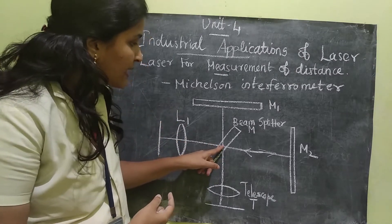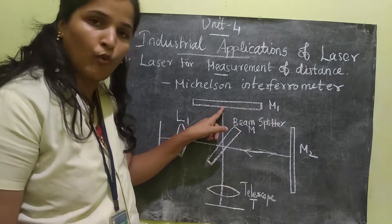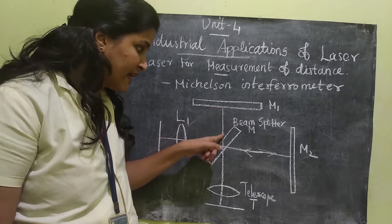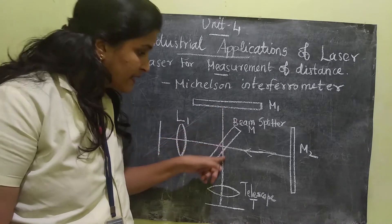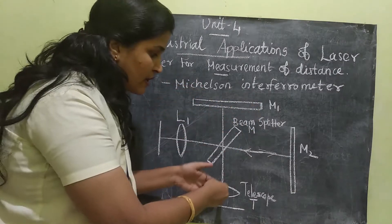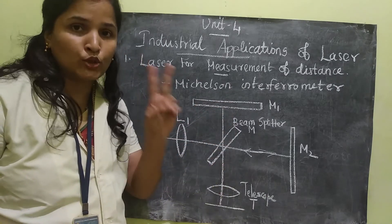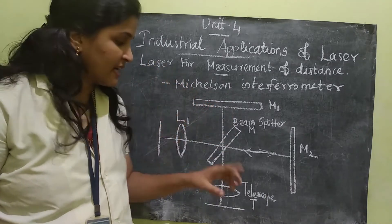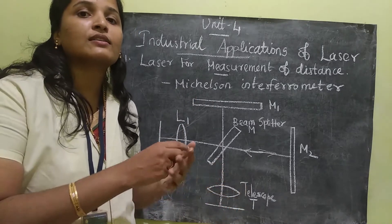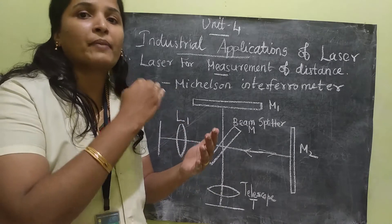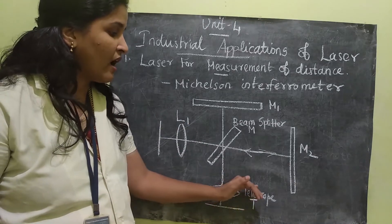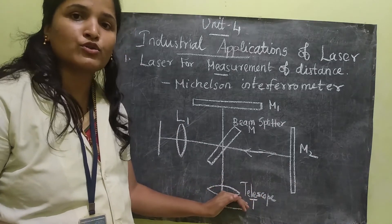The second half of the laser beam will move towards M1, which is also a plane mirror. It will be reflected and pass through the beam splitter to reach the telescope. So one single beam is split and comes towards the telescope as two beams, and because of this we get an interference pattern.